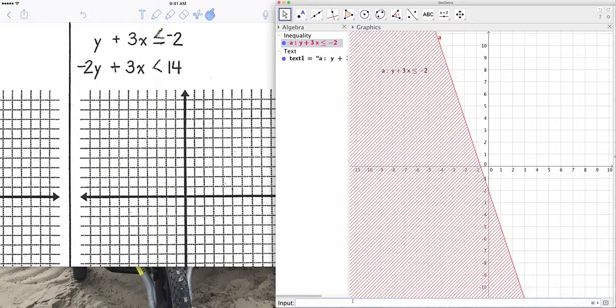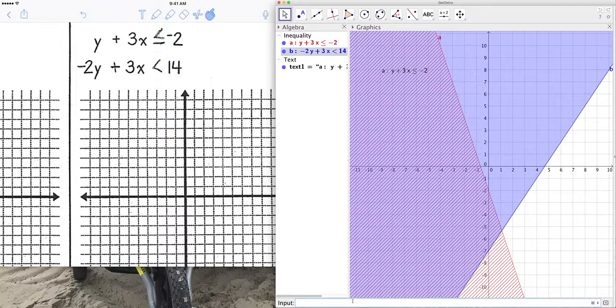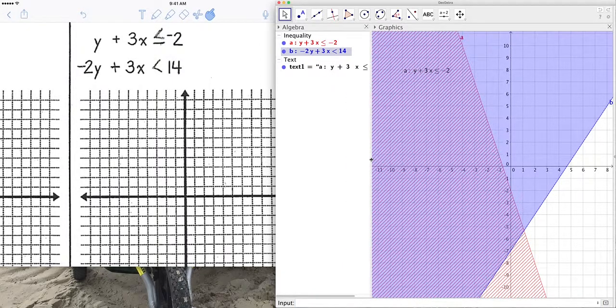Now we get negative 2y plus 3x is less than 14. So, where do you have overlap? Where do you see the blue shaded region and the red shaded region overlap? It's there. This area here. So, that would be the solution set for the system of inequalities.